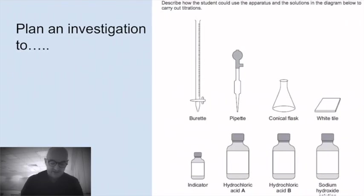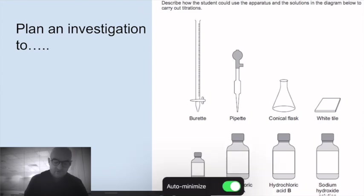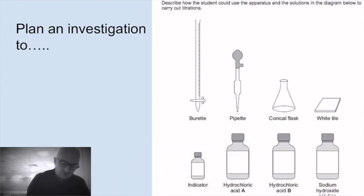It will then go on and ask you to plan an investigation. It could ask you to plan to make a sample of potassium sulfate from an appropriate acid and alkali. This one is from a previous paper, and what it's asking me to do is use appropriate apparatus to carry out a titration. So to carry out a titration. Yes, minimize. Thank you. What I do is I will, first of all,